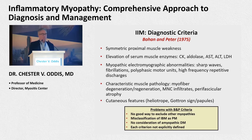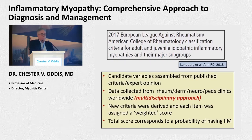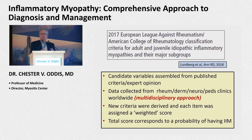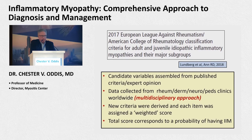Now we've got amyopathic dermatomyositis on the block, and each criterion was really not specifically defined. Over the past couple of years — an initiative that began a long time ago — we have this new combined EULAR and ACR criteria for adult and juvenile idiopathic myopathy.